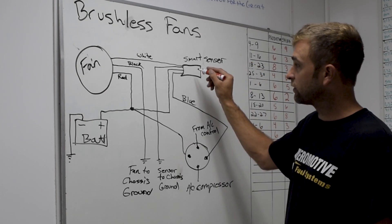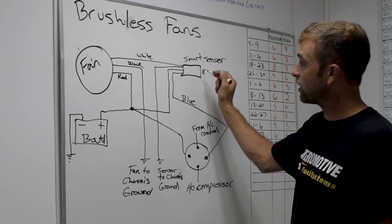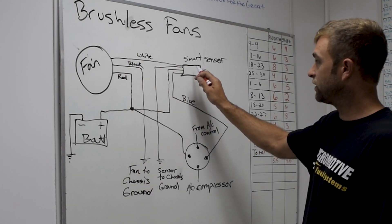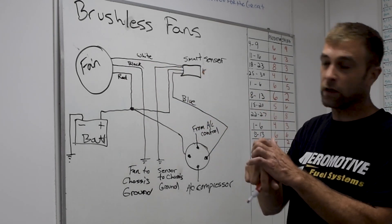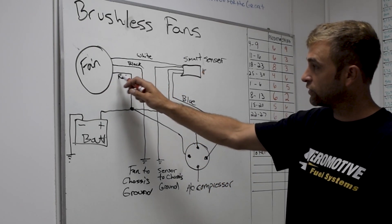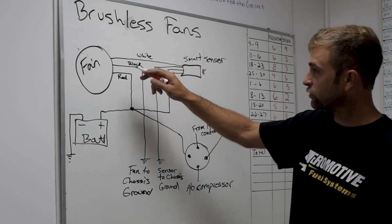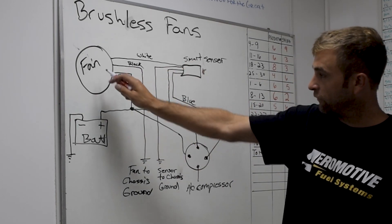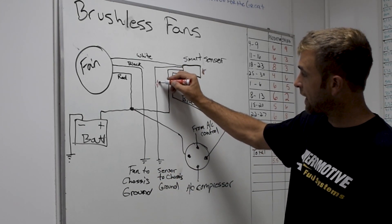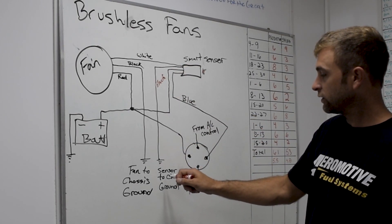So this smart sensor is in the radiator, okay? And it basically tells the fan when to speed up and slow down based on the temperature it sees. So in our diagram, there's a white wire. Obviously, it directly, it's a direct plug-in. And it's going to go right to this sensor. We have our fan power, which is our red here. And then we've got some extra wires. So this black off the fan goes directly to chassis ground. The black off the sensor goes to chassis ground.